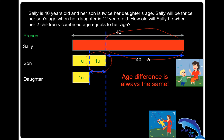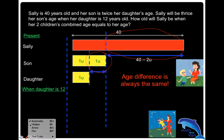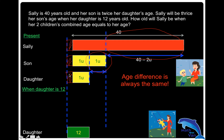In scenario two, when the daughter's age is 12 years old — I don't know how many years later, it could be four, five, six, or seven years — we know that the same number of years is added to all three people. I choose to add it on the left-hand side so as not to disrupt my difference. Now we know the daughter is 12 years old, so maybe change it to green. Using the concept of constant difference, the son must be 12 years old plus one unit.